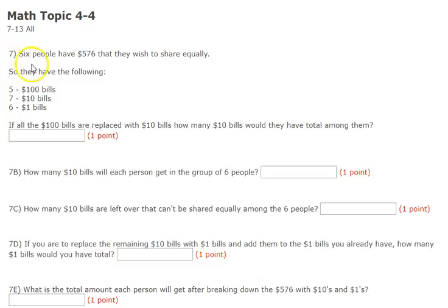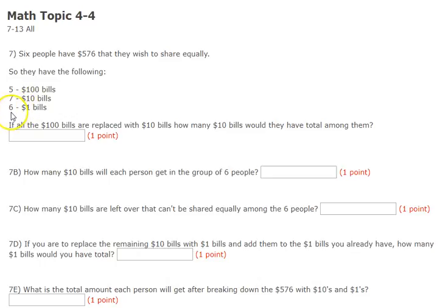Question number 7. Six people have $576 that they wish to share equally. They have five $100 bills, seven $10 bills, and six $1 bills. With this all added up, it equals $576.